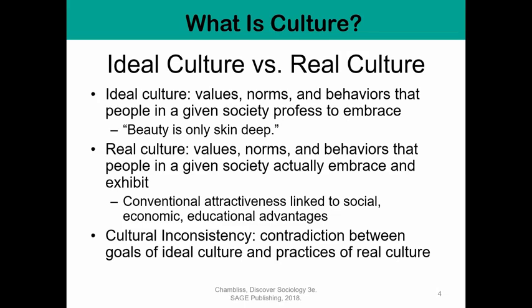So we may say people believe beauty is only skin deep, and that sounds like a good idea. But the real culture is that we do have attitudes about attractiveness — we think certain things are beautiful, and how we treat attractive people differs. People who are really attractive get treated better in society. That is a matter of real culture, while ideologically many of us believe people should be treated the same no matter what they look like. Those contradictions between ideal culture and real culture are called cultural inconsistencies.